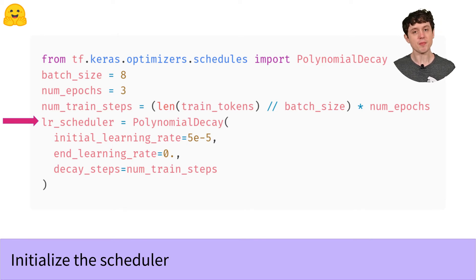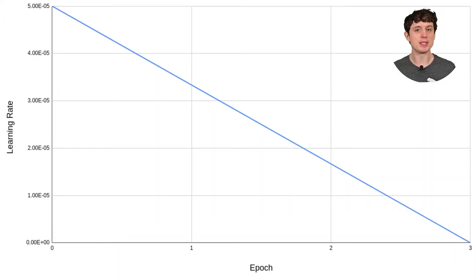So what does the polynomial decay schedule look like? With default options, it's actually just a linear schedule. So it looks like this: it starts at our initial value, which is 5 by 10 to the minus 5 or 5e-5, and then it decays down at a constant rate until it hits zero right at the very end of training.